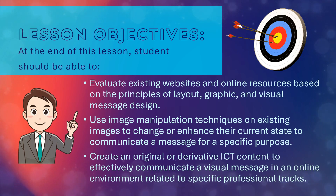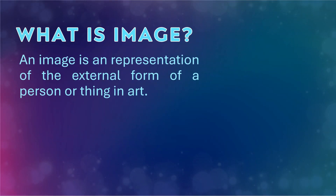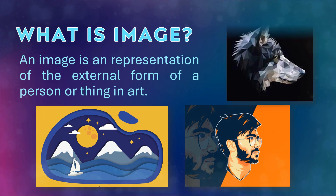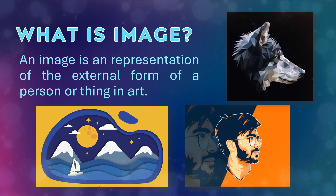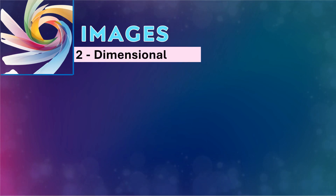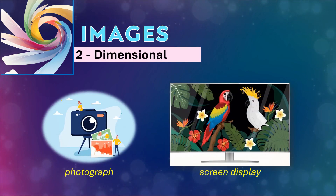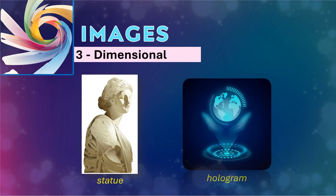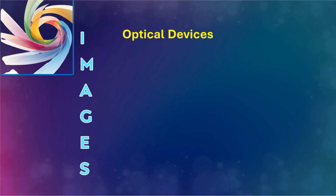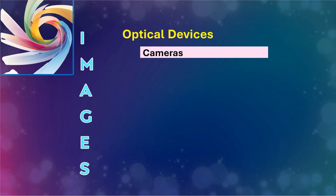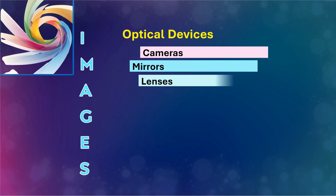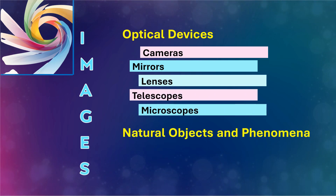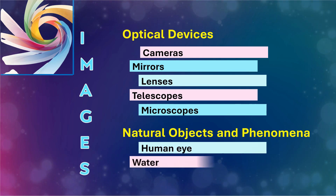Let us first understand what an image is. An image is a representation of the external form of a person or thing in art. Images may be two-dimensional, such as a photograph or screen display, or three-dimensional, such as a statue or hologram. They may be captured by optical devices such as cameras, mirrors, lenses, telescopes, microscopes, etc., and natural objects and phenomena such as the human eye or water.